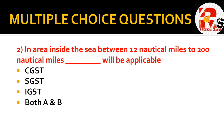The next question: the area inside the sea between 12 nautical miles to 200 nautical miles — which tax will be applicable? Options are CGST, SGST, IGST, or both A and B. If we look at this carefully, the area between 12 nautical miles to 200 nautical miles — for this zone, Integrated Goods and Service Tax, i.e., IGST, is applicable.